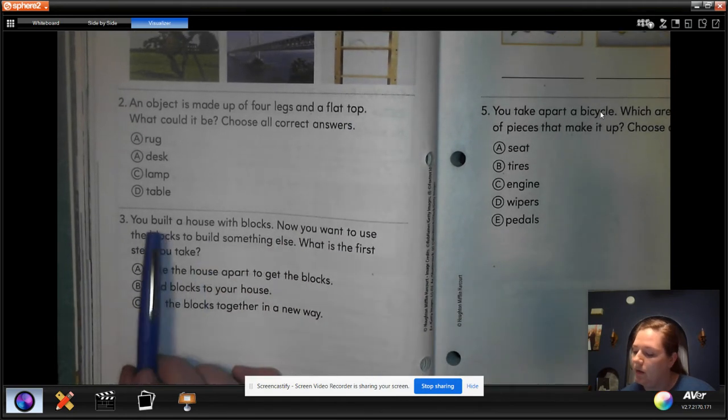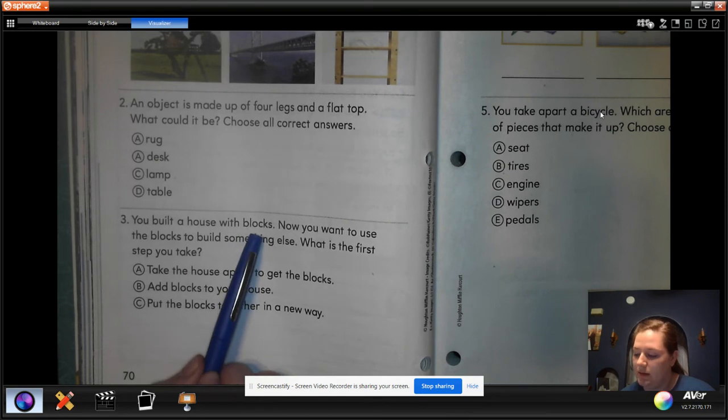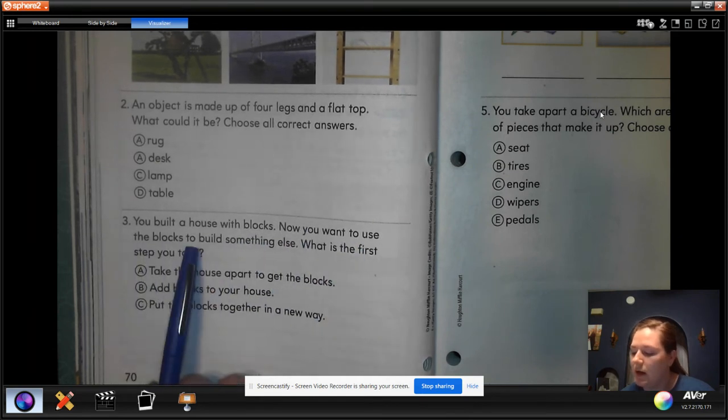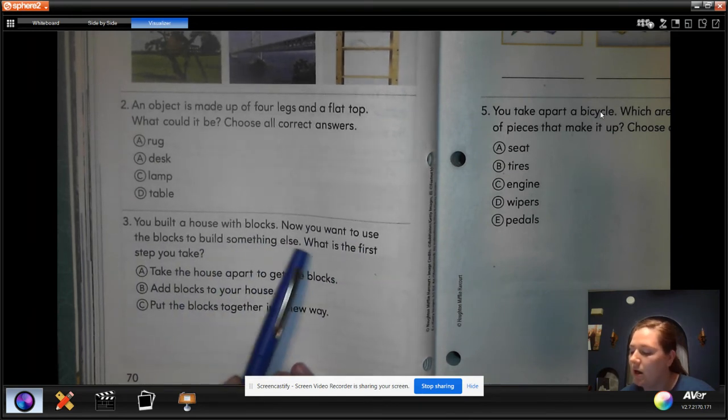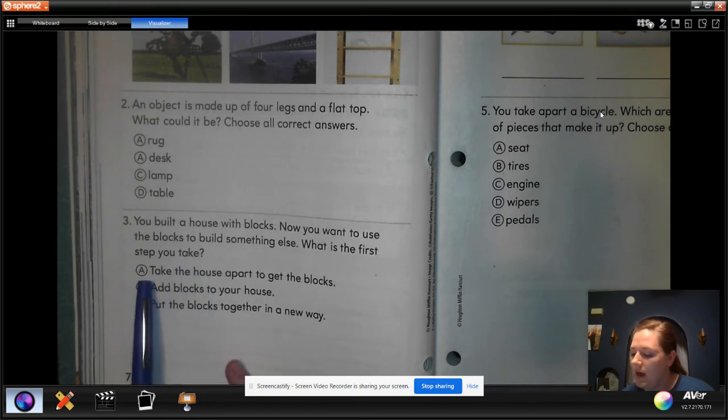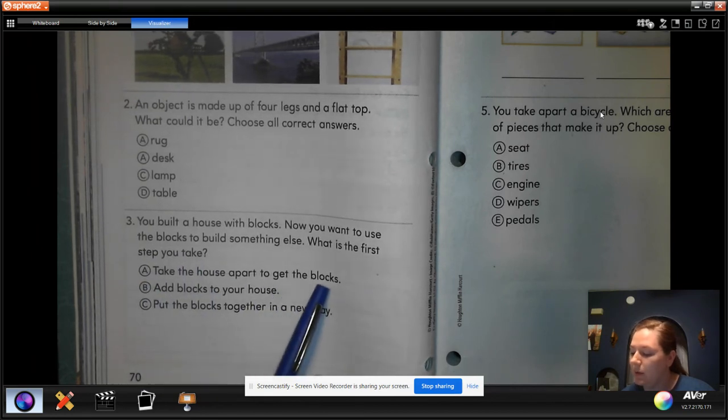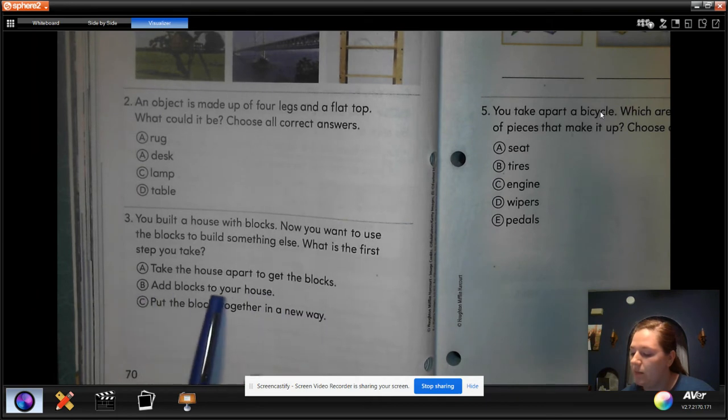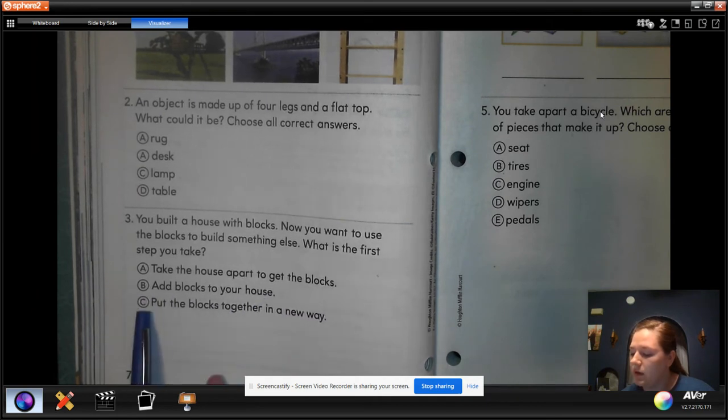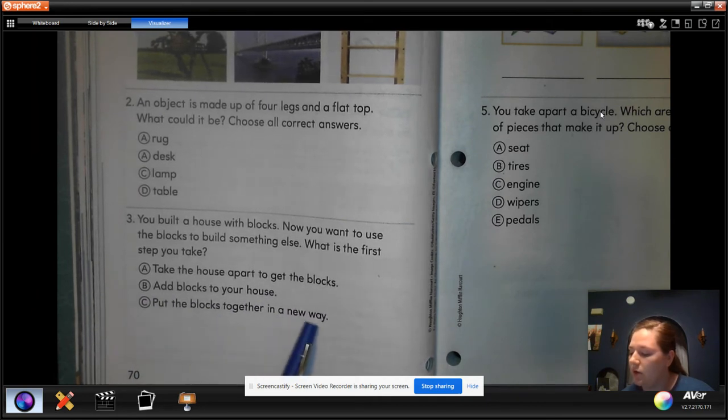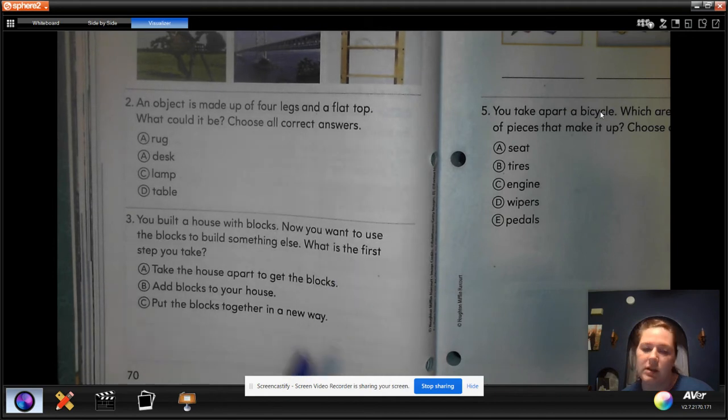Number three. You built a house with blocks. Now you want to use the blocks to build something else. What is the first step you take? A. Take the house apart to get the blocks. B. Add blocks to your house. Or C. Put the blocks together in a new way. What's the first step that you would take?